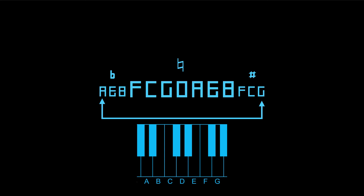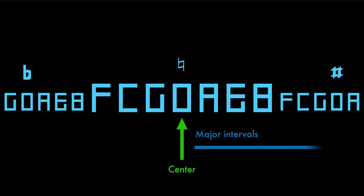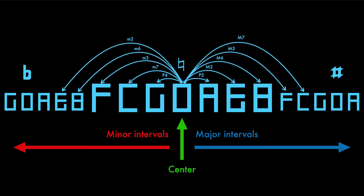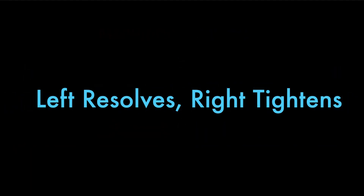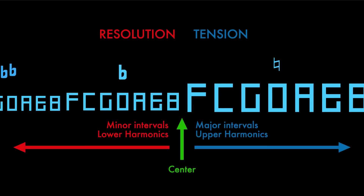The Series of Fifths is not only symmetrical in terms of the distance between the notes, but it also holds another useful feature to help with learning harmony. Take any note as a center note — in our case it is D. All notes to the right of D are the major intervals; all notes to the left are the minor intervals. In other words, notes on the right side are upper harmonics and to the left are lower harmonics. To make it simple, remember this quote: moving towards the left gives resolution, while moving to the right gives tension — left resolves, right tightens. This is valid for all the notes you pick as a center.